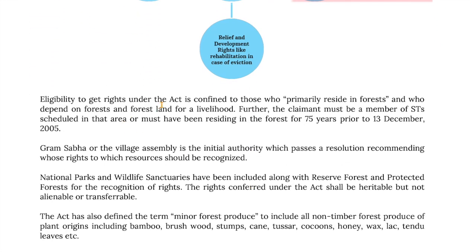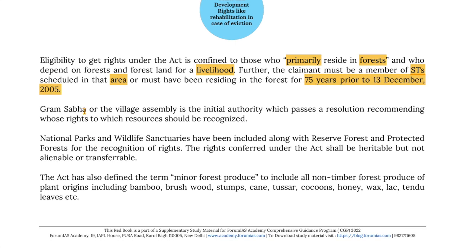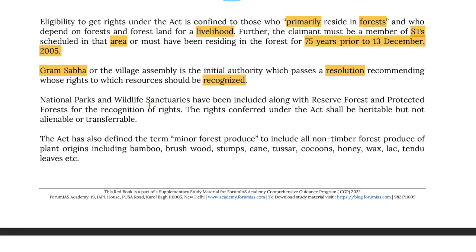Eligibility to get rights under the act is confined to those who primarily reside in the forest and depend on forest and forest land for a livelihood. The claimant must be a member of the ST community scheduled in that area or must have been residing in the forest for 75 years prior to the cutoff date of 13 December 2005. Gram Sabha or the village assembly is the initial authority which passes a resolution recommending whose right to which resources should be recognized. National parks and wildlife sanctuaries have been included along with reserved forests and protected forests for the recognition of rights. The rights conferred under this act shall be heritable but not alienable or transferable.